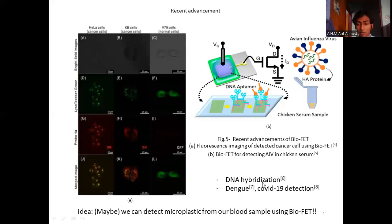DNA hybridization is possible using BioFET. DNA FET actually, which is also one kind of BioFET. And the techniques are developed for the rapid test of dengue and COVID-19 detection. And in recent future, we may detect microplastic from our blood samples using BioFET.